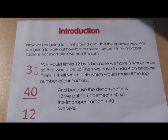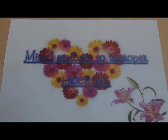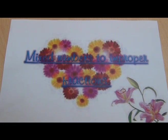And because the denominator is 12, we put 12 underneath 40, so the improper fraction is 40 over 12. Mixed numbers to improper fractions.